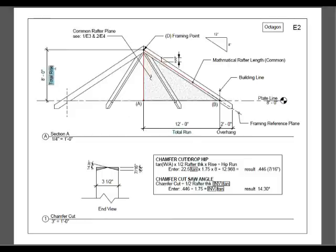And here it is again, back in your section view. From A to D, that's your mathematical rafter length for your common rafter. And let's look at this example here.